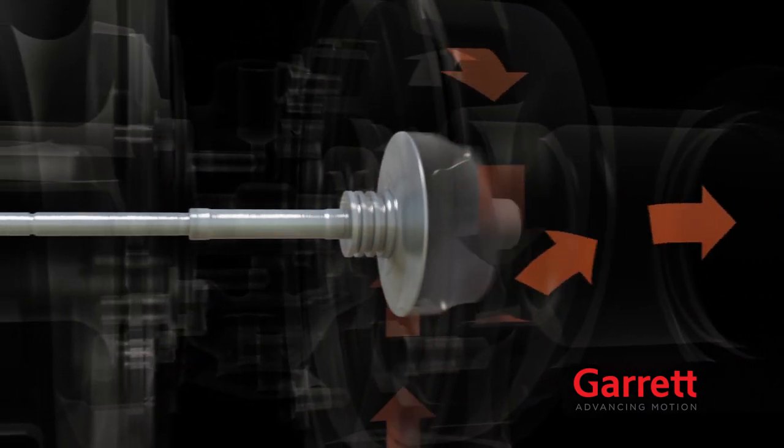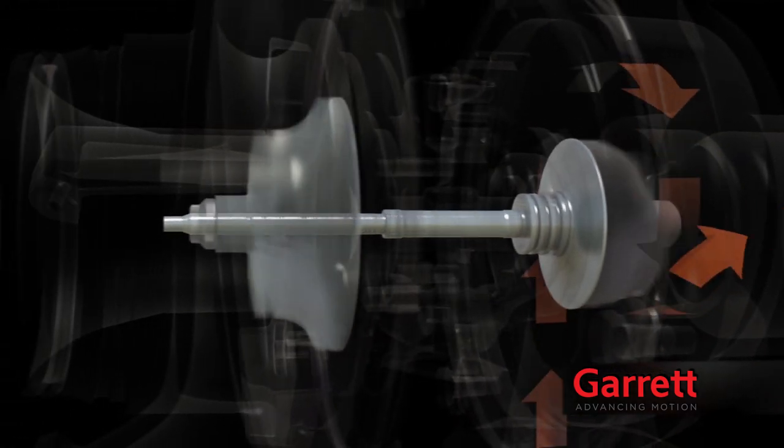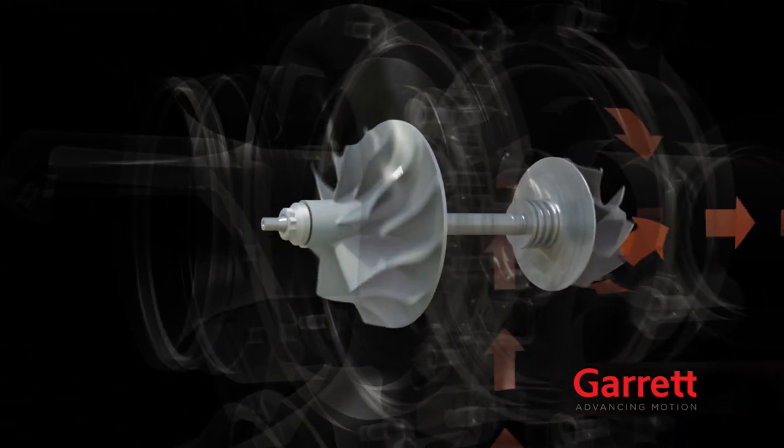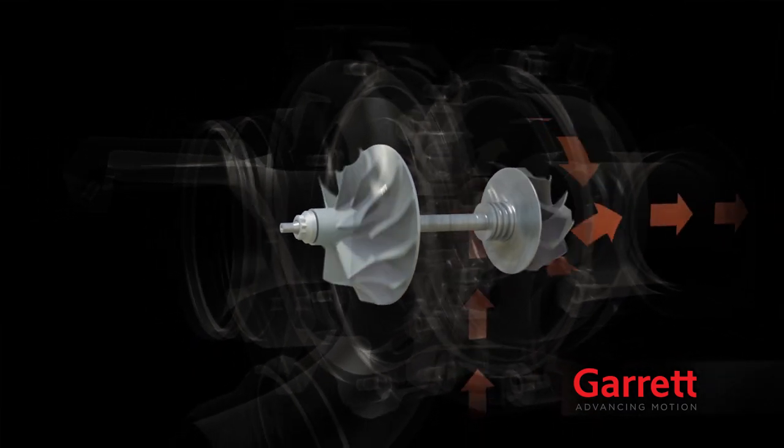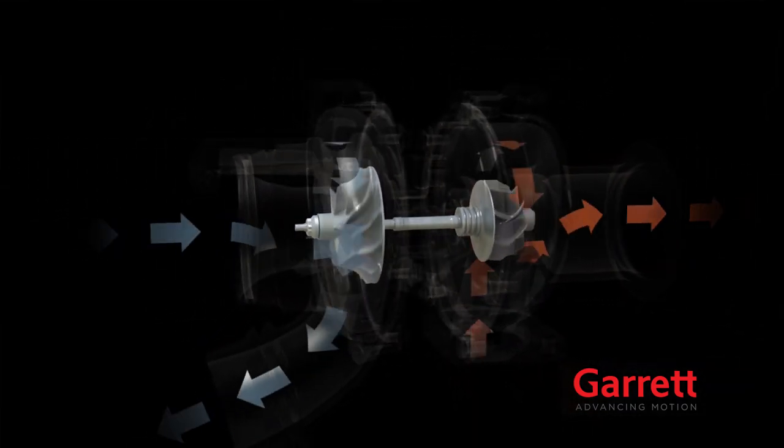On the other side of the turbine wheel, connected by a shaft, is a compressor wheel. These two wheels turn together and the rapid spinning allows the compressor to suck in large amounts of ambient air and compress it.